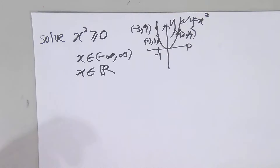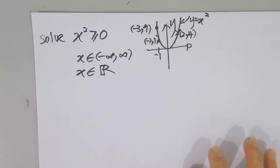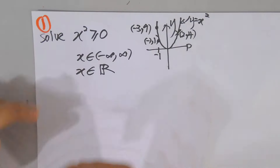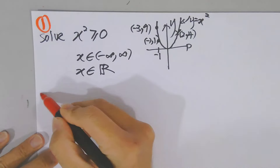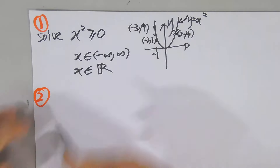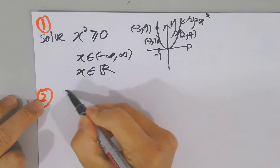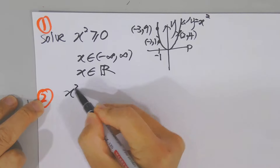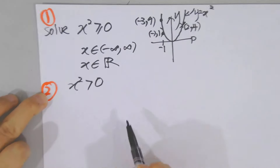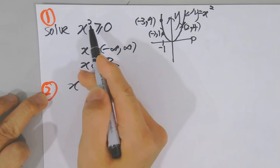Please follow this video carefully. This was Case 1. Now let's go to Case 2: what if the question asks x² > 0? What is the solution, and what's the difference between these two cases?